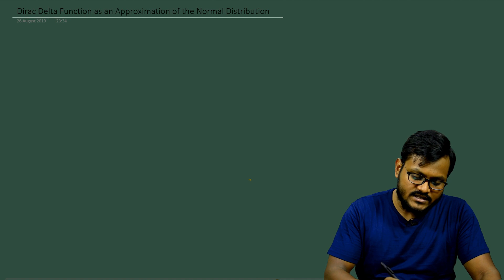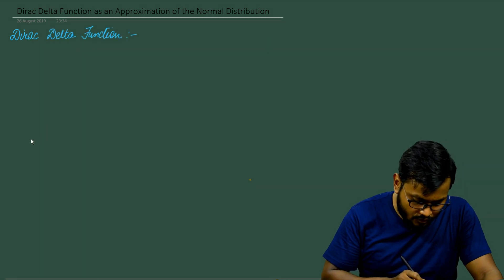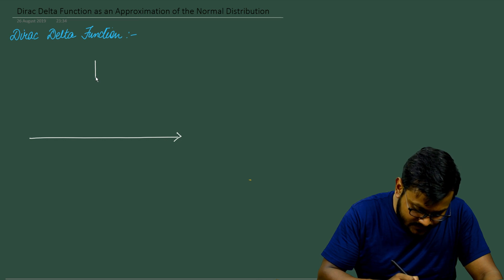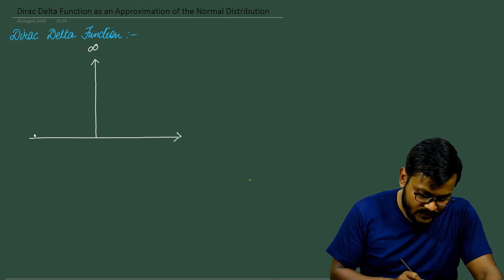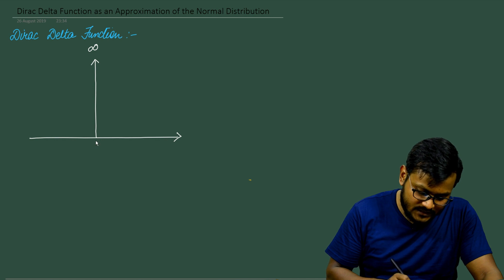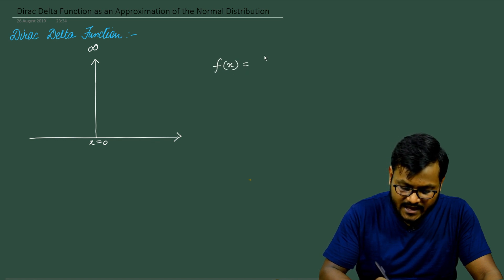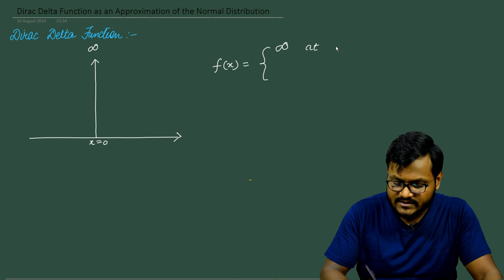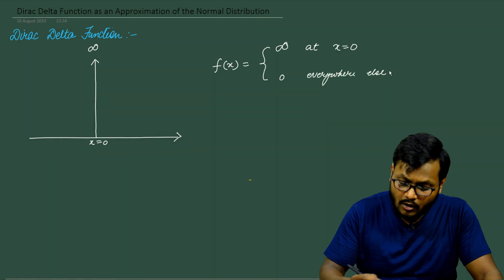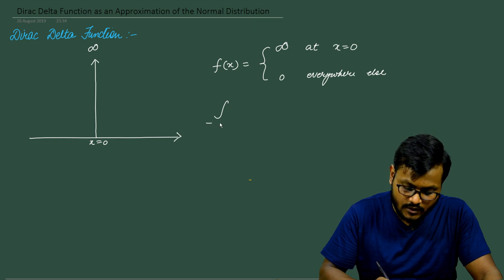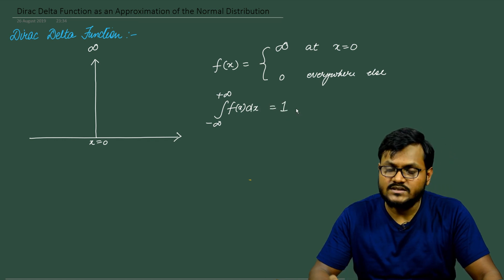Some of you might already know what a Dirac delta function is, but if not, let me define it for you. If I draw the x-axis, the function can have two values: it can have a value of infinity, or it can have a value of 0. So it has a value of infinity at x equals 0, and I define this Dirac delta function f(x) as the function which has a value of infinity at x equals 0 and a value of 0 everywhere else. Along with this, it also has the interesting property that if I integrate this function from minus infinity to plus infinity, f(x) dx comes out to be exactly equal to 1.